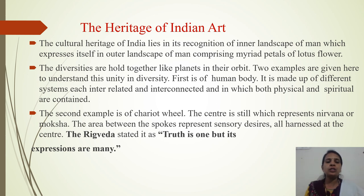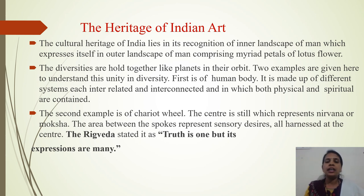The diversities are held together like planets in their orbit. Toh ye jo bahut sari vividhita hai, wo kendra mein ek hi ekta se bandhi hoi hai — jis tariqe se graha jo hain, wo apne apne kaksha mein bandhe huye hote hain. Two examples are given here to understand this unity in diversity.